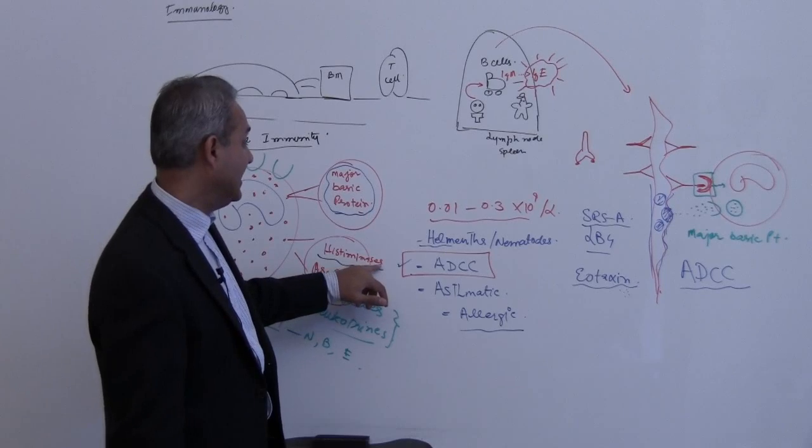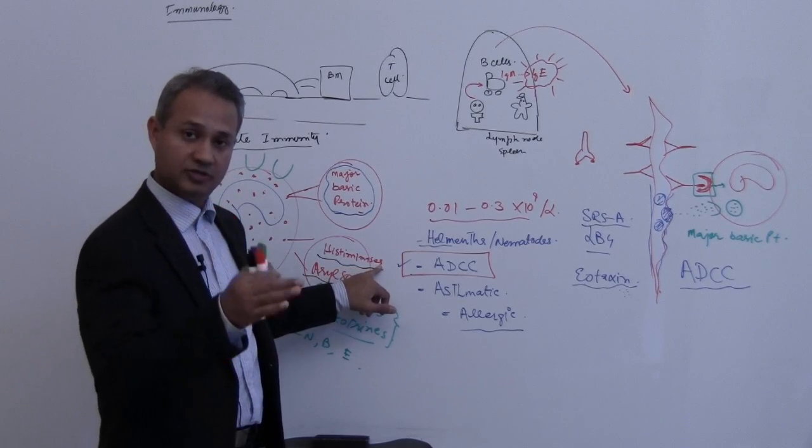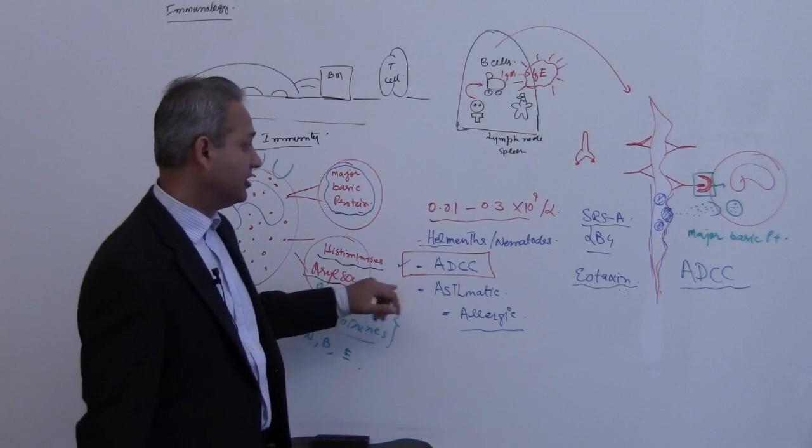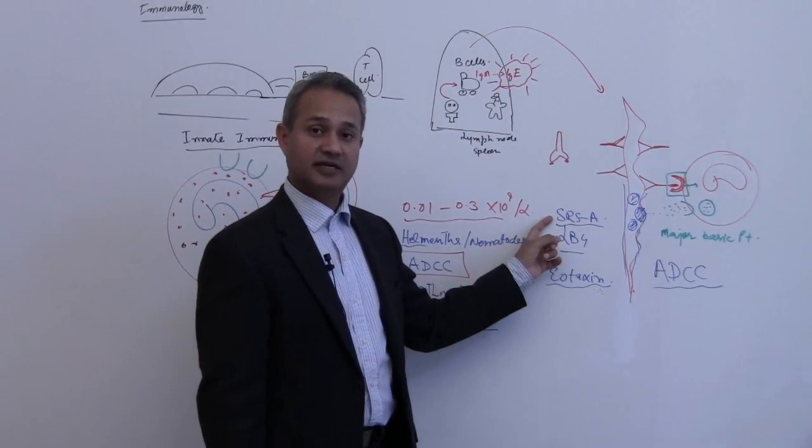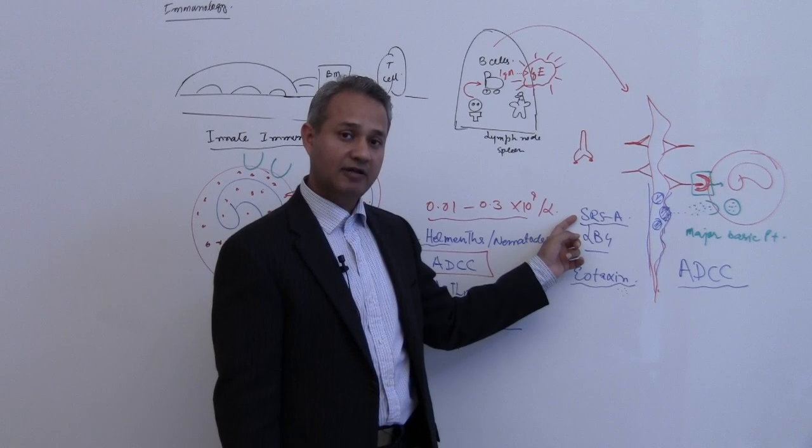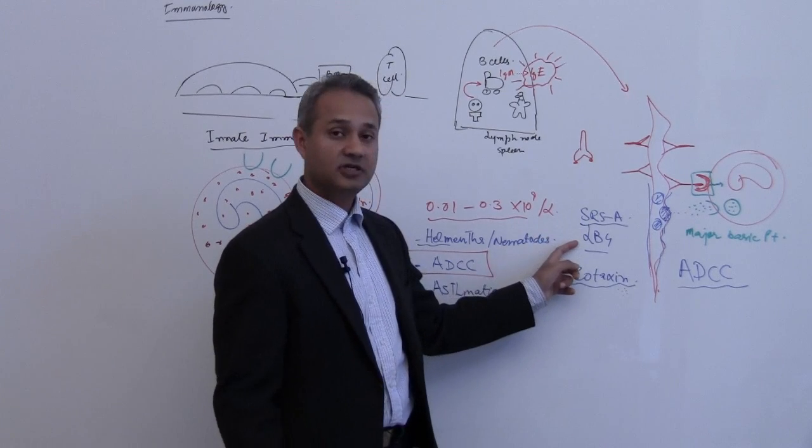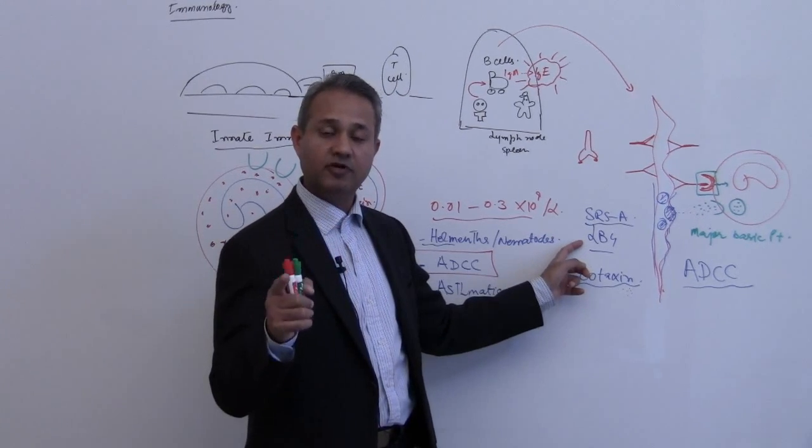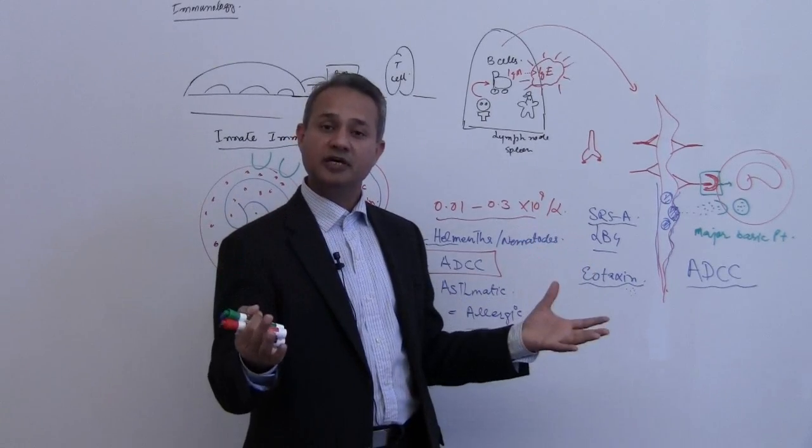They release histaminase, not histamine, to reduce the histamine and aryl sulfates to reduce the SRSA. What are SRSA? Slow reacting substances of anaphylaxis. What are these? Leukotrienes. Leukotriene B4, C4, D4 and prostaglandins, the lipid mediators.